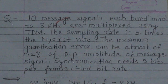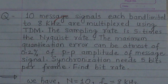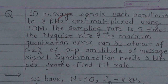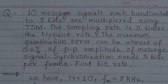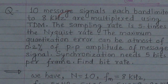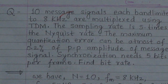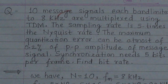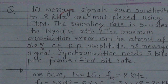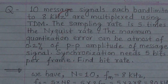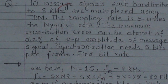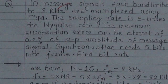The question is: 10 message signals, each band limited to 8 kHz, are multiplexed using TDM. The sampling rate is 5 times the Nyquist rate. The maximum quantization error can be at most 0.2% of the peak-to-peak amplitude of the message signal. Synchronization needs 5 bits per frame. Find the bit rate.